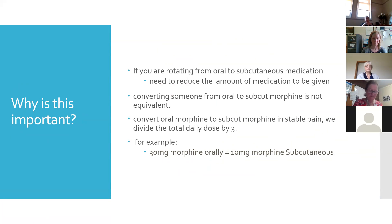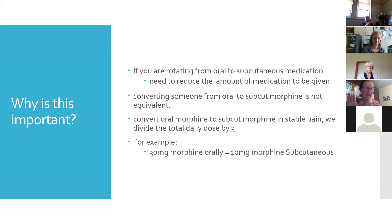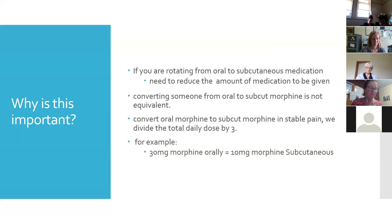When looking at rotation and first pass metabolism, the most important thing to remember is that when going from an oral medication to a subcutaneous route, you reduce the amount of medication given — because you don't want to cause opioid toxicity, meaning too much opioid on board. It's important to remember that if going from oral to subcut, the dose will be much smaller. For example, when converting oral morphine to subcutaneous morphine, we divide by three.